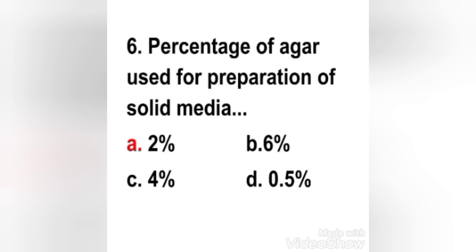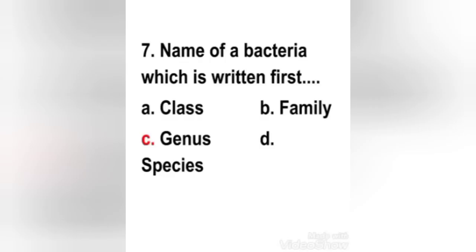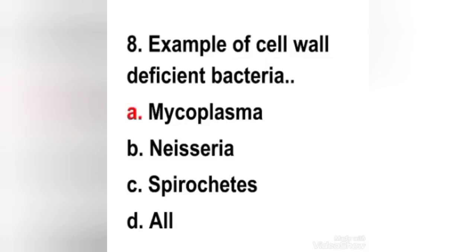The right answer is option A — 2%. The percentage of agar used for preparation of solid media is 2%. Next question: in bacterial nomenclature, which name is written first? Options: class, family, genus, species. The right answer is option C — genus. The name of a bacterium which is written first is the genus.